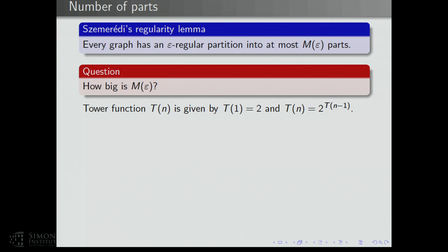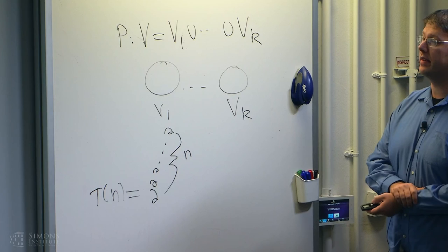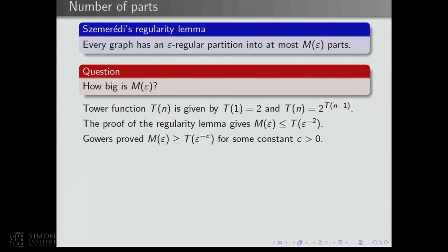To understand the growth of M(epsilon), you have to introduce the tower function. T(n) is given by T(1) = 2 and T(n) = 2^{T(n-1)}. So T(n) is a tower of twos of height n. The proof of the regularity lemma gives a bound on M(epsilon) which is a tower of twos of height 1/epsilon².